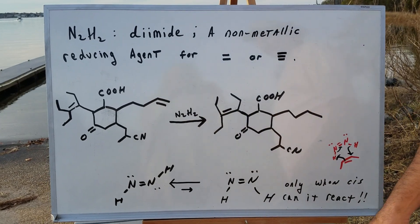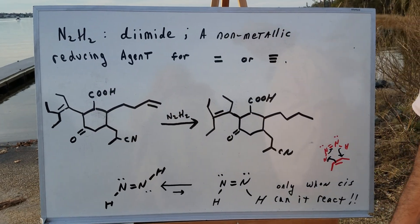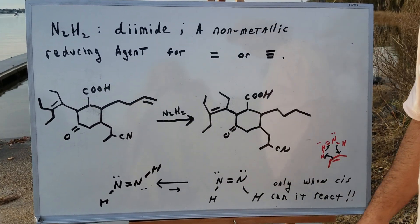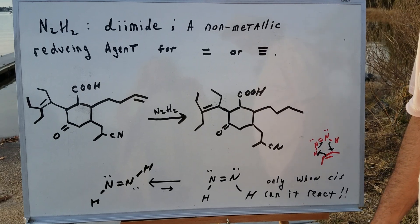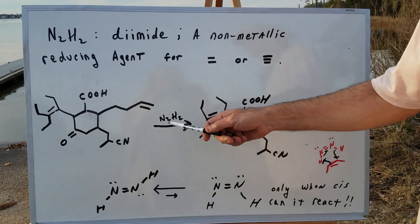Notice it's on the end, so I can call it a terminal alkene. Here we have an internal alkene. We have a carboxylic acid. We have a ketone and a nitrile.